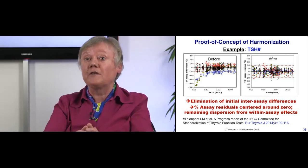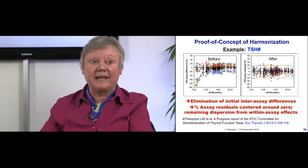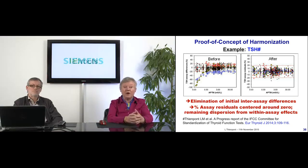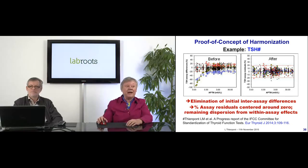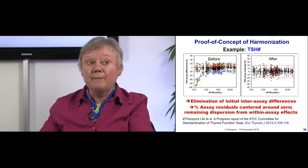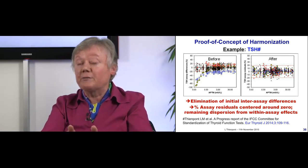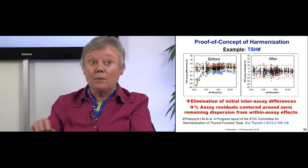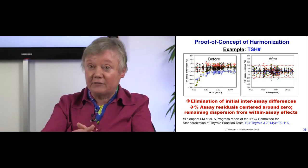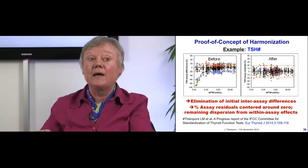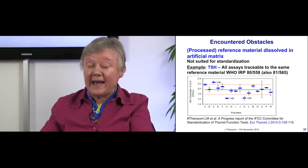I show the proof of concept of harmonization for TSH. We performed a method comparison with 16 immunoassays, presenting the percentage difference of results for a panel of samples. The most discrepant assays are shown in different colors — blue symbols and red triangles. Before the harmonization process there are clear differences between immunoassays; after the harmonization process the inter-assay differences are eliminated, percentage assay residuals are nicely centered around zero, and the remaining dispersion is from within-assay effects.